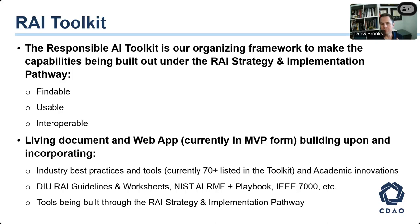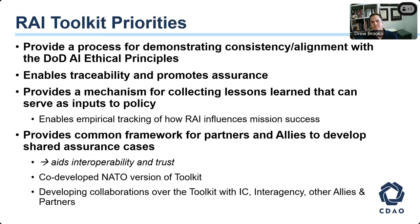The RAI toolkit provides a standard process — though it's tailorable and modular, and right now entirely voluntary. You don't have to go through from one end to the other; you can pick the pieces that work with your particular organizational governance structure. It's a process for demonstrating how a given project is aligned or consistent with the AI ethical principles, enabling traceability throughout the life cycle of a project, promoting assurance, and collecting lessons learned. It also provides a framework we can share in common with partners and allies — for example, we've worked closely with NATO to develop a very similar toolkit focused on their principles of ethical AI.